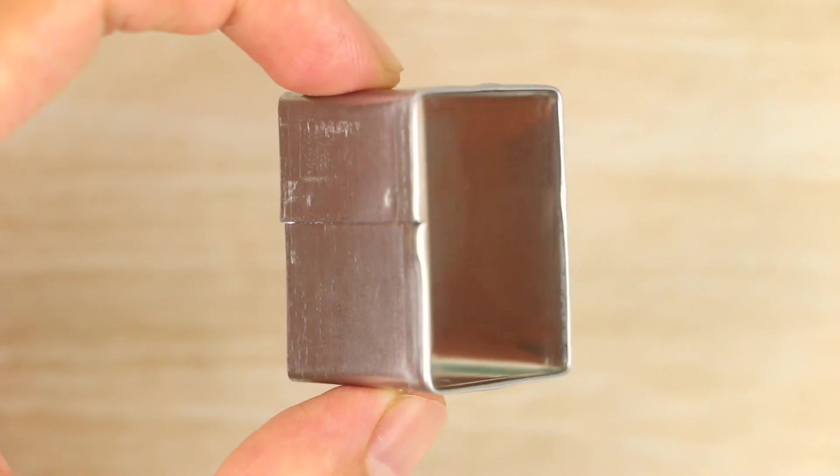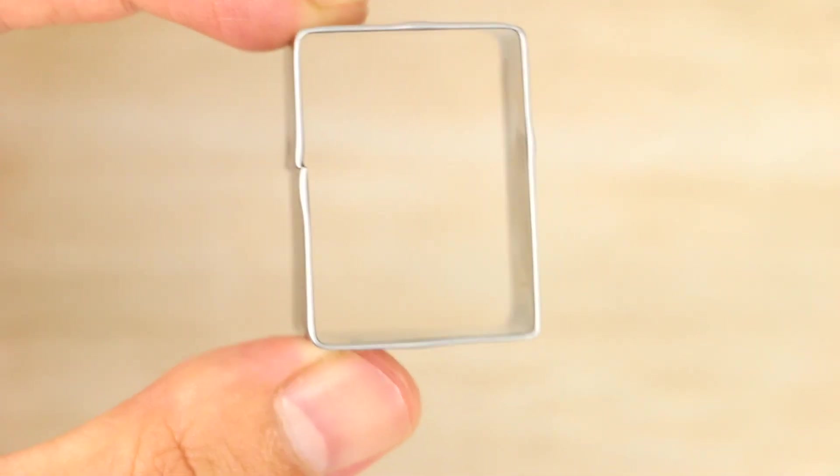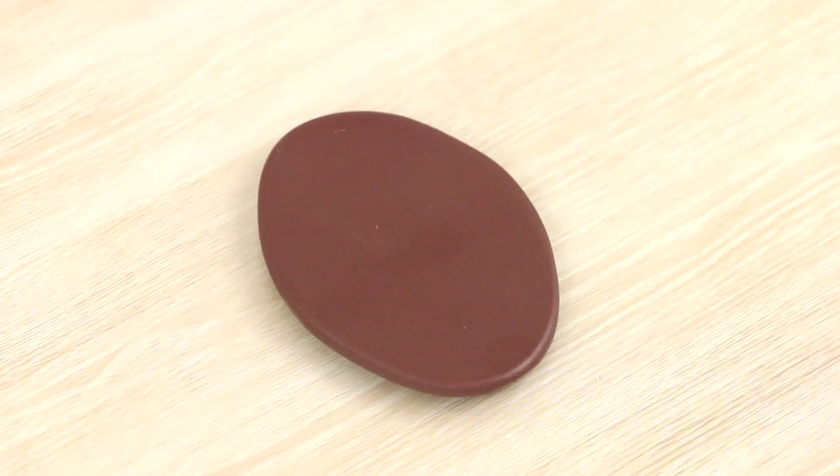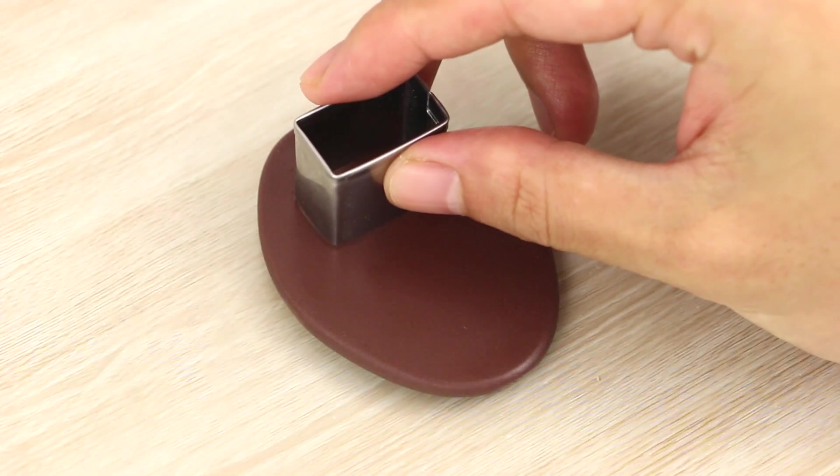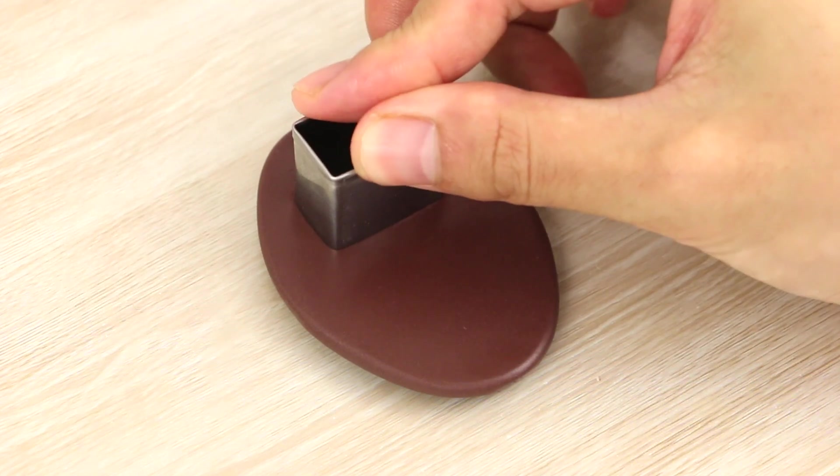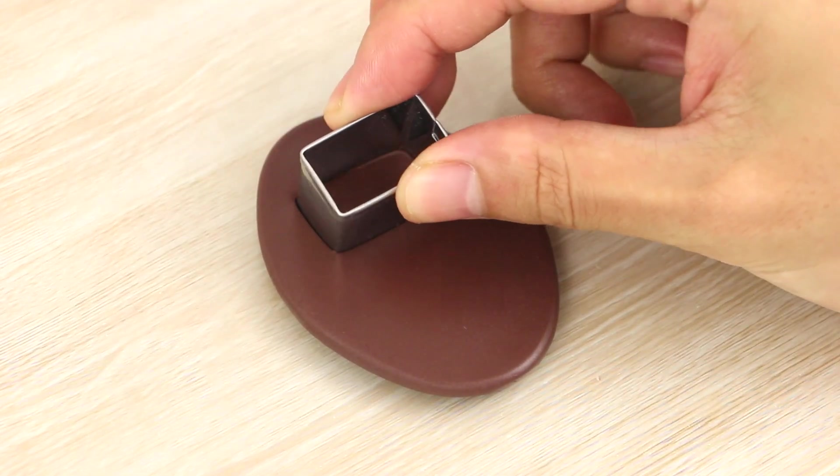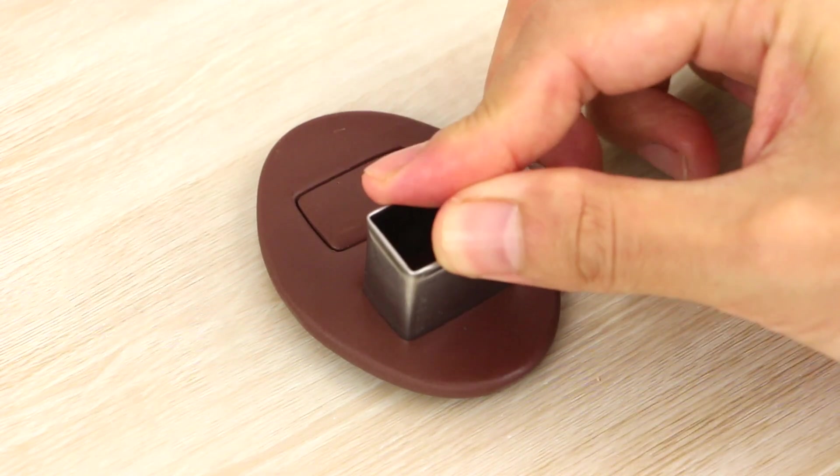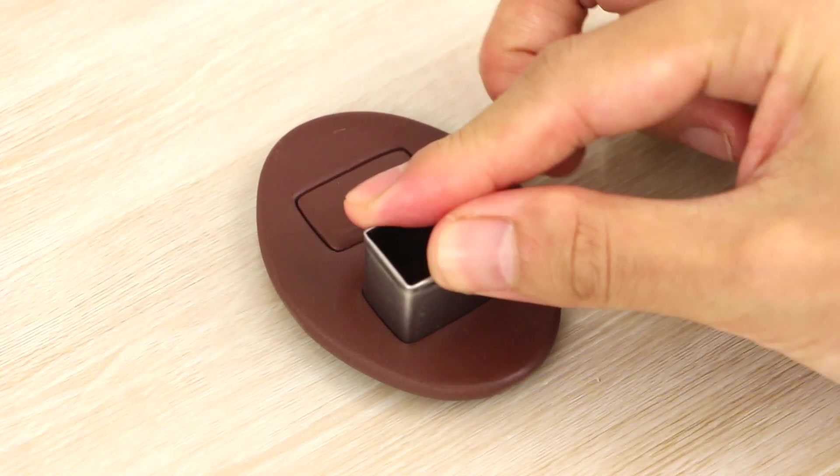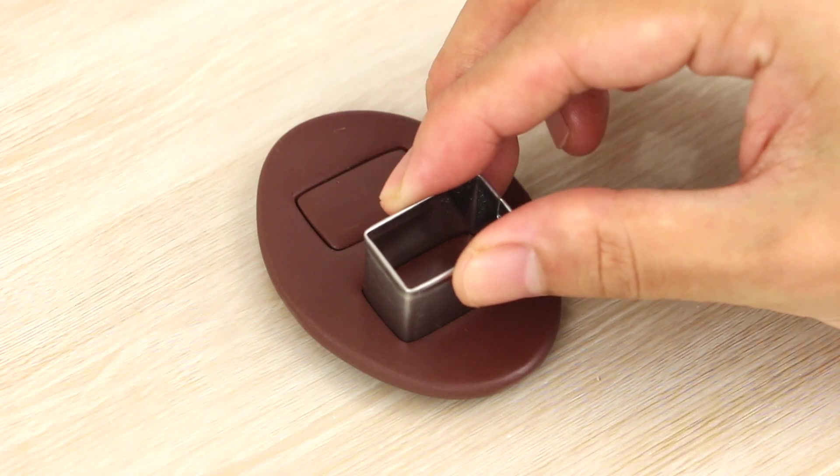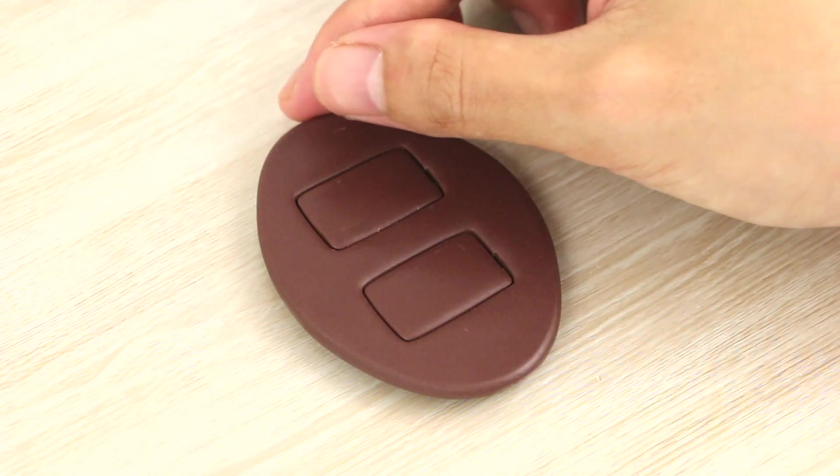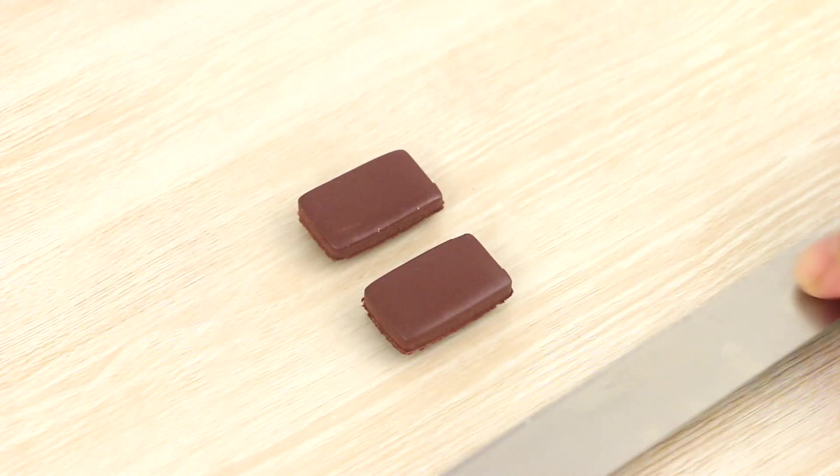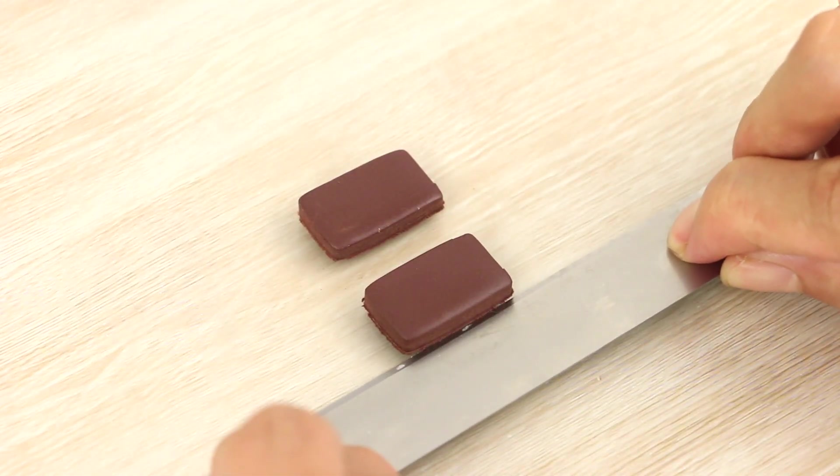Then next, I have a rectangular cookie cutter here, and I'm going to cut out two horizontal pieces from the rolled out clay. And then peel away the excess and remove them off my work surface, just sliding a blade underneath them.